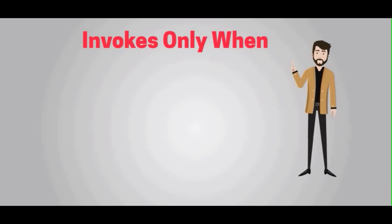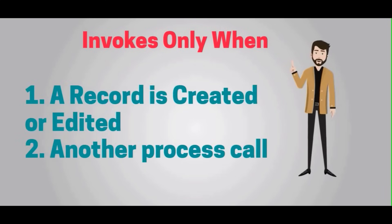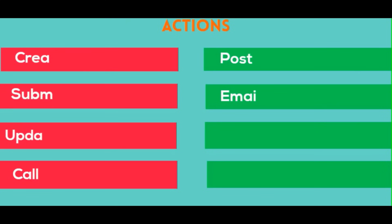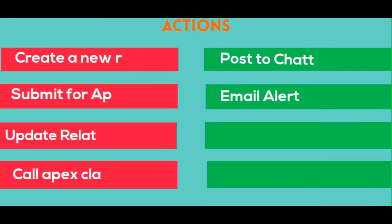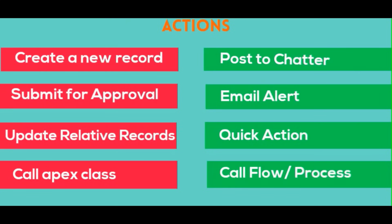Process Builder can be invoked in two ways: when a record is created or edited, and when another process calls it. When a record is created or edited, you can perform any one action, a combination of actions, or all of these actions. I will explain each one of these actions with examples for better understanding.